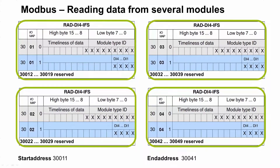If several I/O modules are to be read by a controller, it should be noted that each I/O module uses 10 words. Therefore, a range of Modbus addresses can be read. For example, the process data of four I/O modules of the same type with I/O map addresses 01, 02, 03, and 04 can be read in one request. In this case, an address area with 40 words — Modbus register addresses 11 to 41 — can be read.